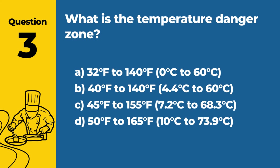Question 3. What is the temperature danger zone? Answer: B. 40°F to 140°F (4.4°C to 60°C). This range is where bacteria can grow most rapidly, and food should not be left in this zone for more than 2 hours.